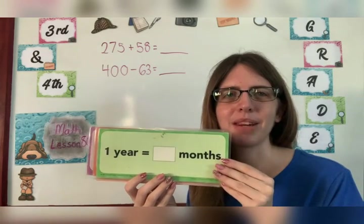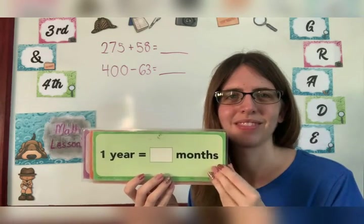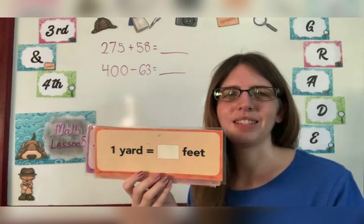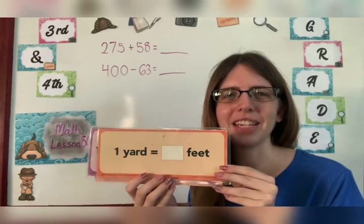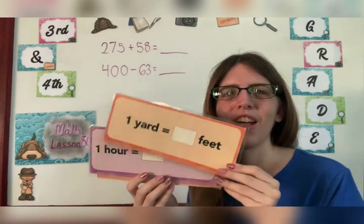One year equals how many months? Twelve months. One yard equals how many feet? Three feet.